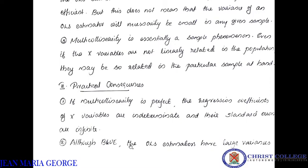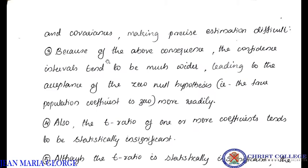Second, although the BLUE property — best linear unbiased — can be satisfied, OLS estimators will have large variance and covariance. The theoretical problem is that even if we satisfy the BLUE property, the minimum variance is still a large variance value. When we consider both variance and covariance, precise estimation becomes difficult. This is not a correct estimation — in the population and sample regression function, we have a variable variance, and we don't have a precise estimate.